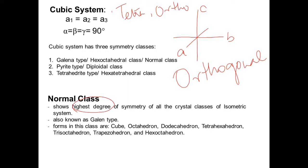The normal class of the cubic system shows the highest degree of symmetry of all crystal classes of the isometric system. A cube, in the normal class, can be defined as a crystal form which shows the maximum elements of symmetry. The forms in this class are: cube, octahedron, dodecahedron, tetra hexahedron, tris octahedron, trapezohedron, and hex octahedron.